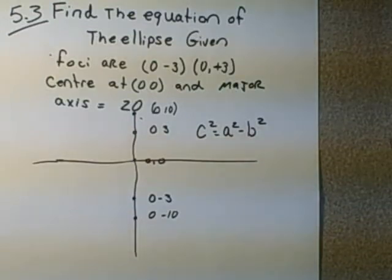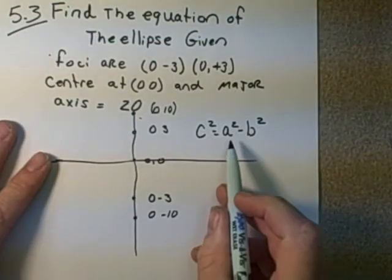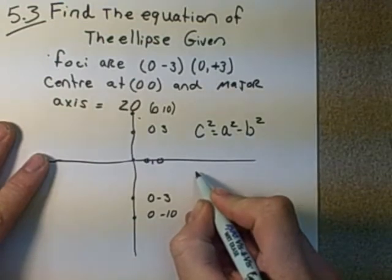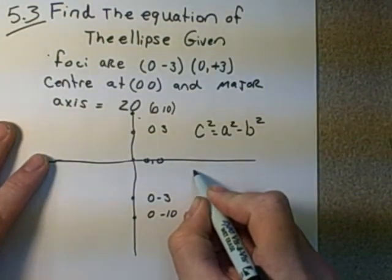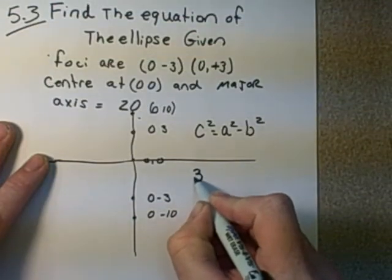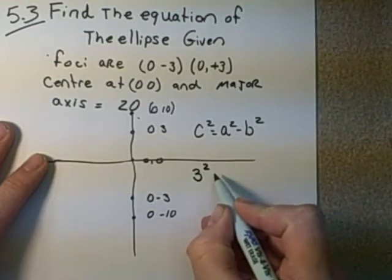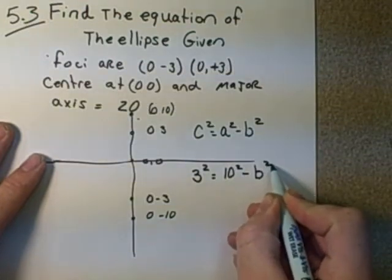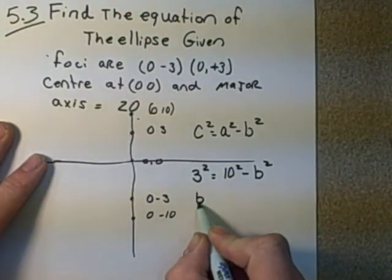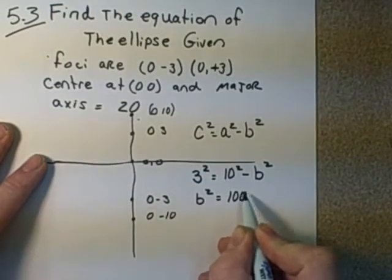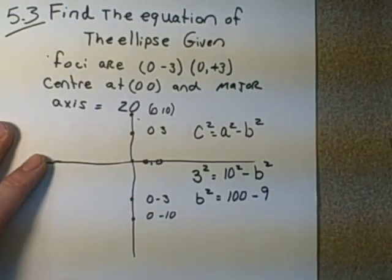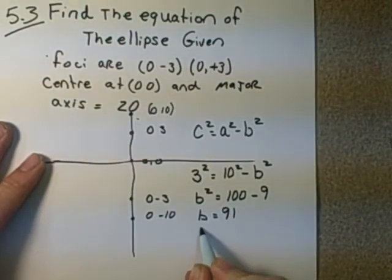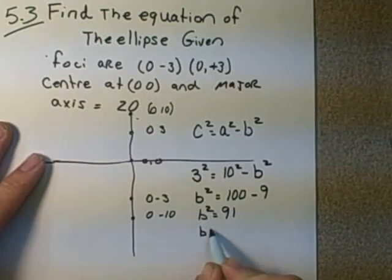So that means that we can calculate - we know that C stands for the foci points, and that A stands for the vertice points from the center. So the foci points here, we can see that C squared, in our case, C is 3. A, in our case, is 10. And B squared is unknown. So we can rearrange this and say that B squared is equal to 100 for 10 squared, minus 9 for 3 squared. So this is going to be that B squared is equal to 91. Or in our case, B is equal to root 91.